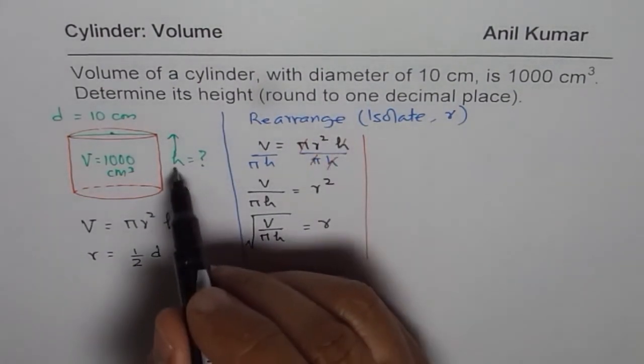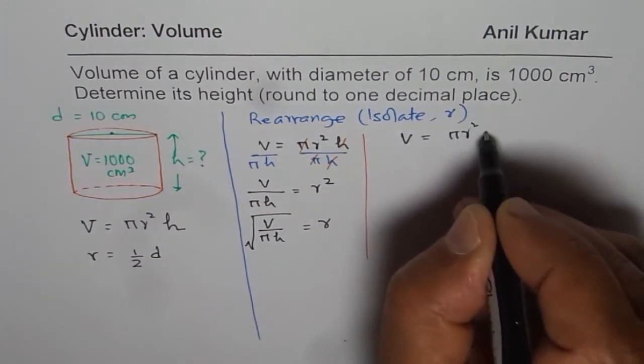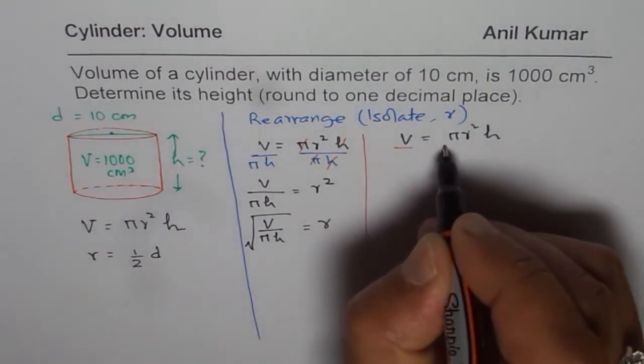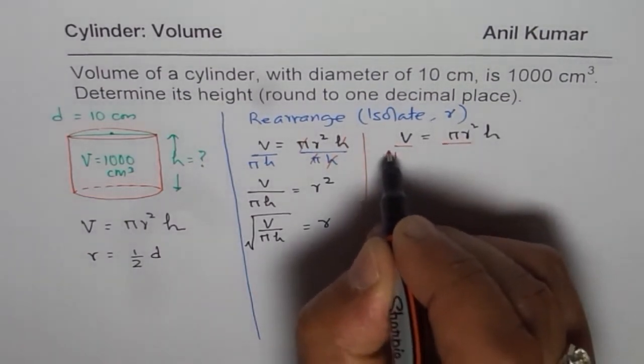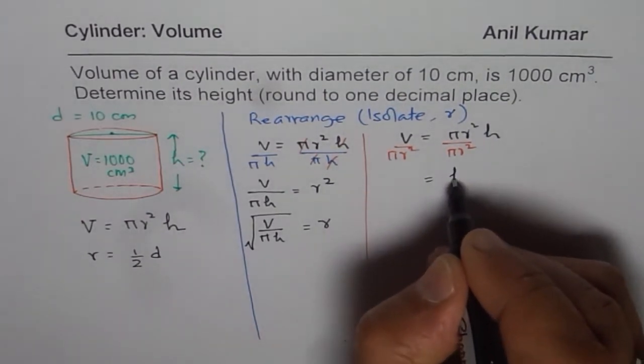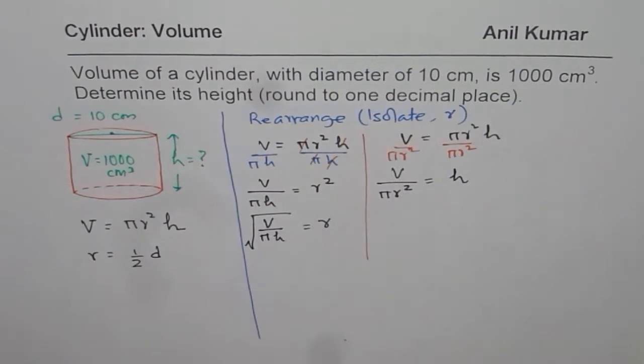So we will redo this, and this time isolate height. So volume is πr²h. To isolate h, what should we do? Divide by πr². So we get h = V/(πr²).